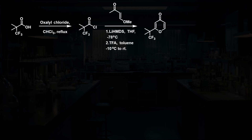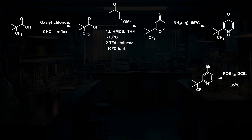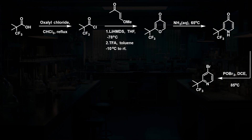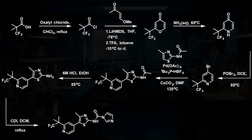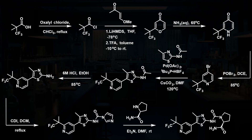This pyrone is converted to the pyridone with aqueous ammonia, which works by a ring-opening and closing mechanism. Treatment with POBr3 converts the pyridone to a 4-bromopyridine, which is used in a direct cross-coupling of this pyrazole without the need for metalation of the heterocycle. Removal of the acetyl group under acidic conditions reveals the amino group, which is reacted with CDI to form an intermediate that can be displaced by L-prolinamide to form the final product.